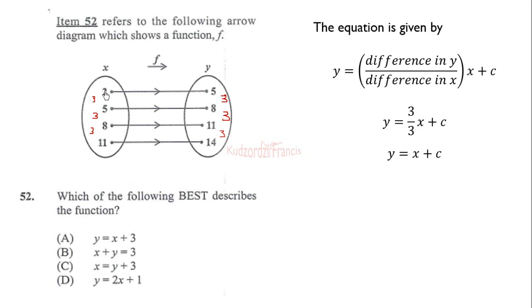At this point, any of these pairs should satisfy this so that we can find the value of c. Let's pick 2, 5 for simplicity. We substitute 5 here and 2 here, then solve for c to get c equals 3. Now we substitute c back over here to get y equals x plus 3. So that is the equation.